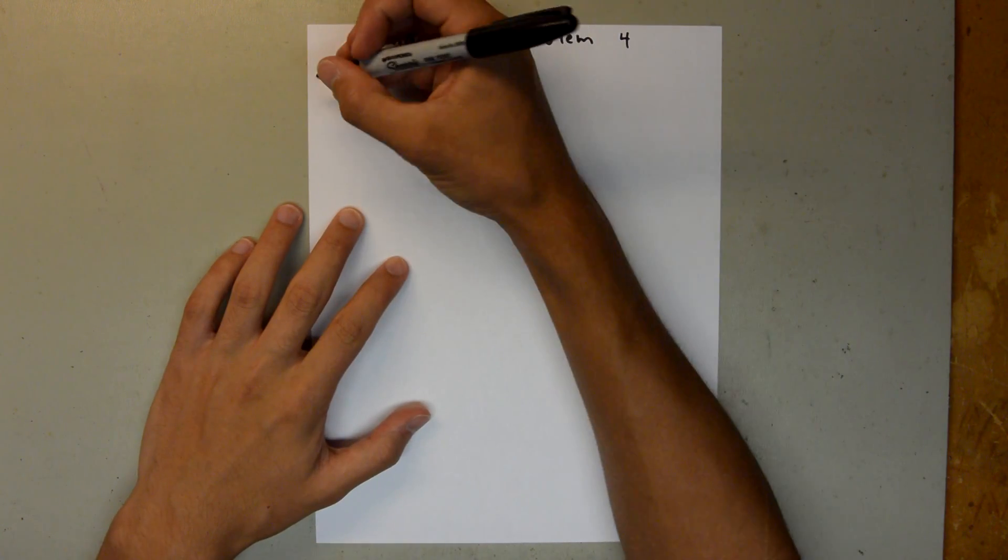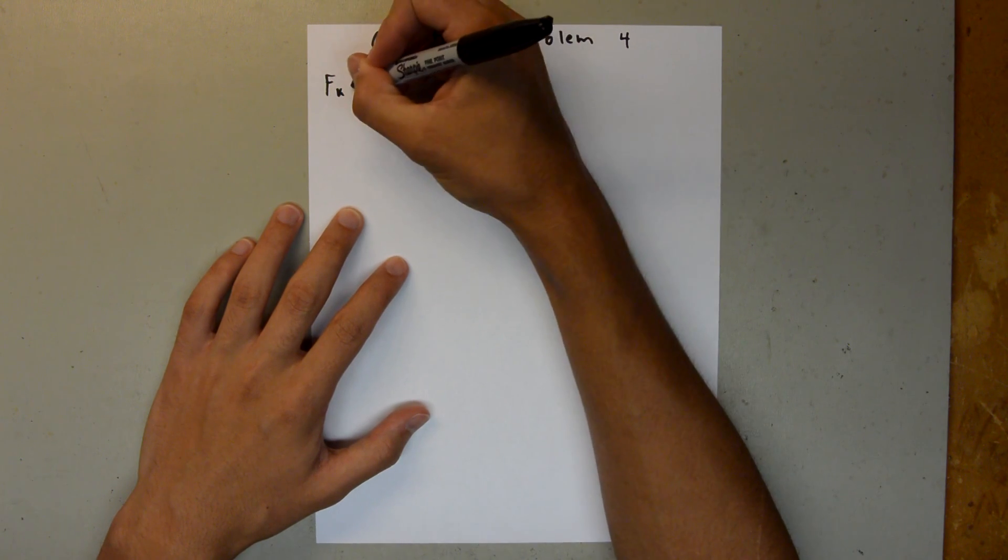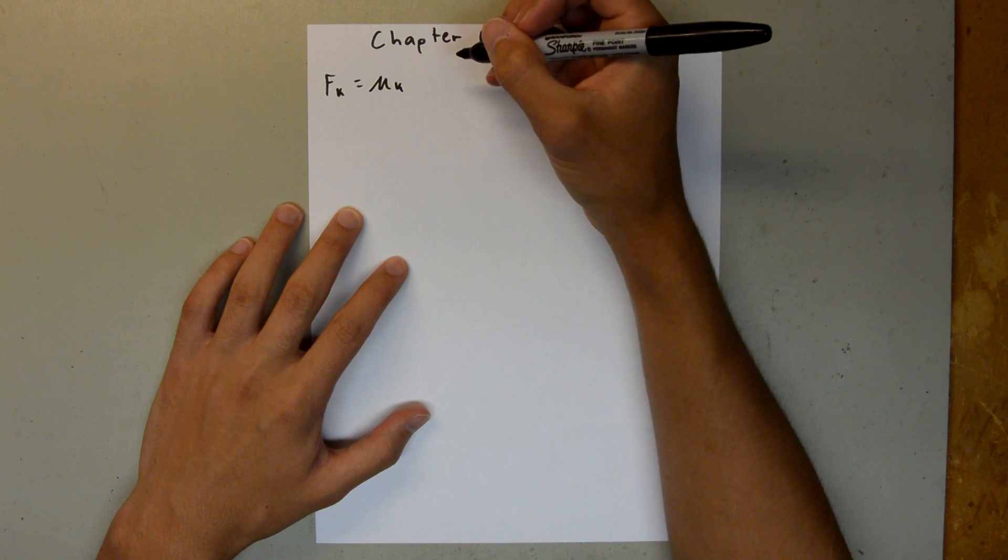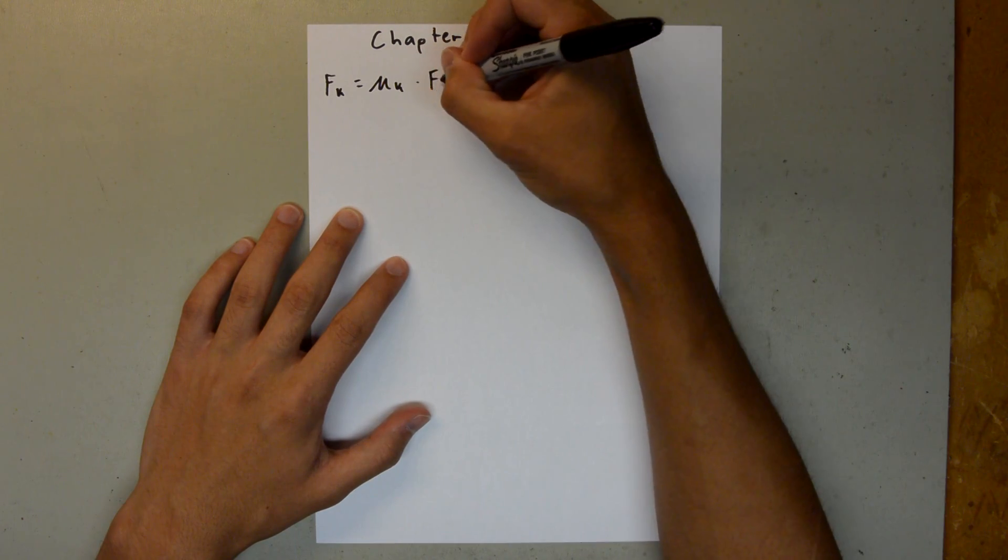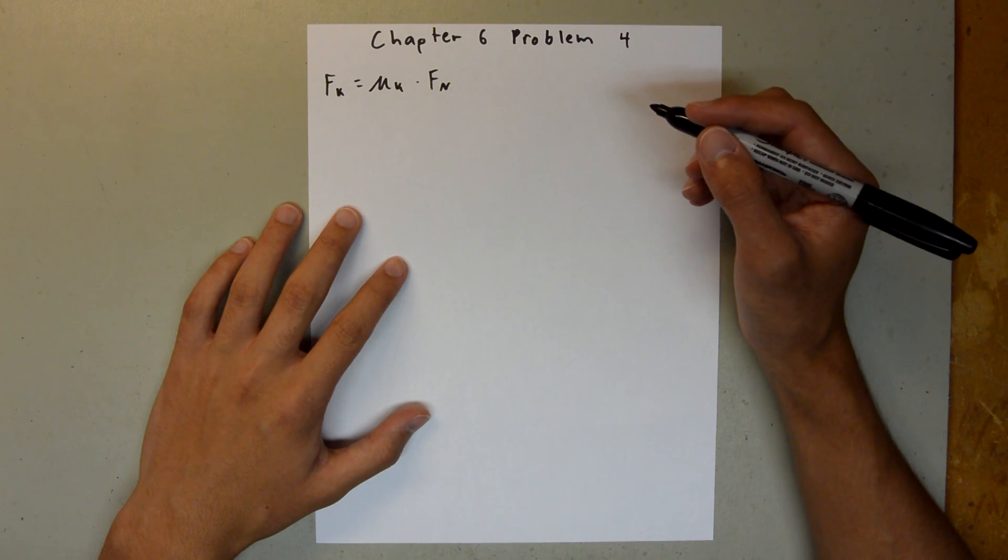So, we know that the force of kinetic friction is always equal to the coefficient of kinetic friction times the normal force. Now, the baseball player has no net force in the y direction,